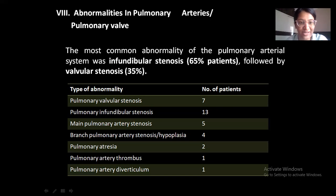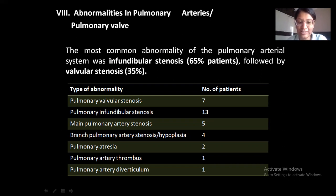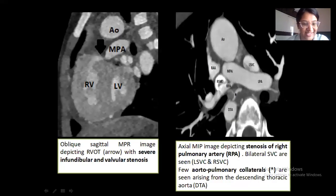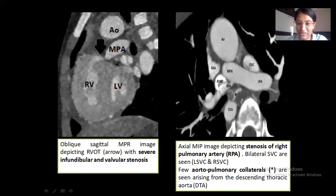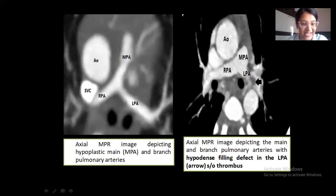Coming to abnormalities in pulmonary arteries: the most common abnormality was infundibular stenosis in 65% of patients, followed by valvular stenosis in 35% of patients. Other abnormalities seen were stenosis of the main pulmonary arteries, stenosis or hypoplasia of the branch pulmonary arteries, and pulmonary arterial thrombus or diverticulum. The first image is an oblique sagittal MPR image depicting the right ventricular outflow tract with severe infundibular and valvular stenosis. The second image is an axial MIP image of a different patient depicting stenosis of the right pulmonary artery at its origin, bilateral superior vena cava, and aortopulmonary collaterals arising from the descending thoracic aorta. An additional axial MPR image depicts hypoplastic main and branch pulmonary arteries, and another image shows a hypodense filling defect in the left pulmonary artery suggestive of thrombus.